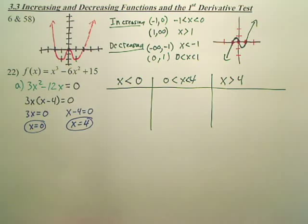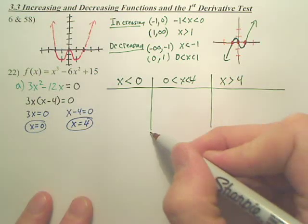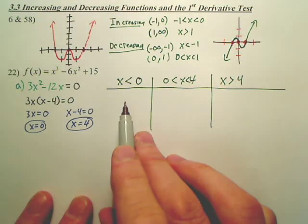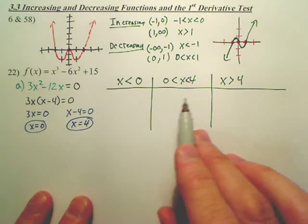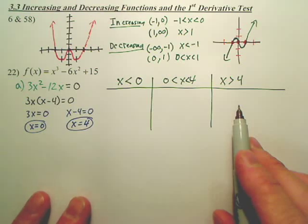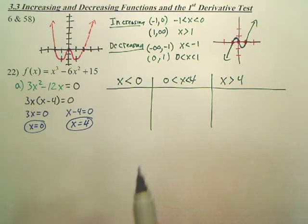You guys okay with that so far? If I want to find out where it's increasing, decreasing, aren't these my critical numbers? These lines? So aren't we going to find out if my slope here is positive or negative? Your critical numbers are the only places where your slope will change. So you've got to consider that.